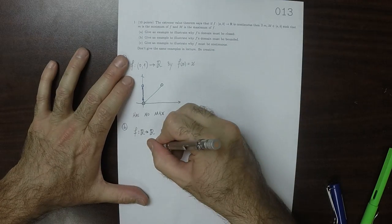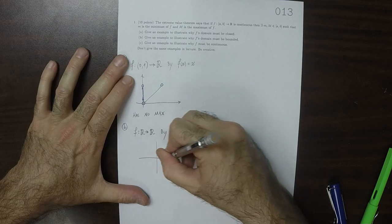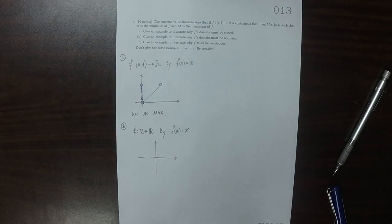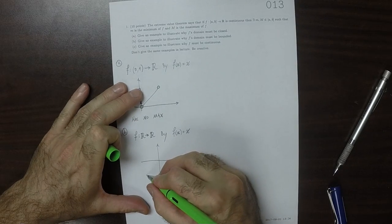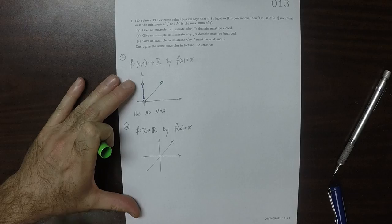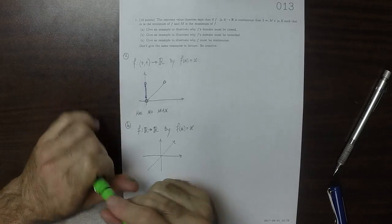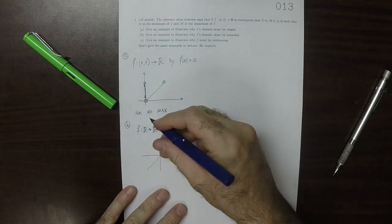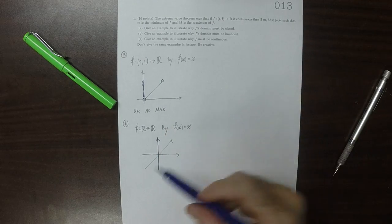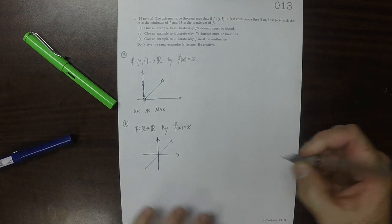So in this case the function looks like just the whole thing. So that means that this whole Y is the image. So this has no max.